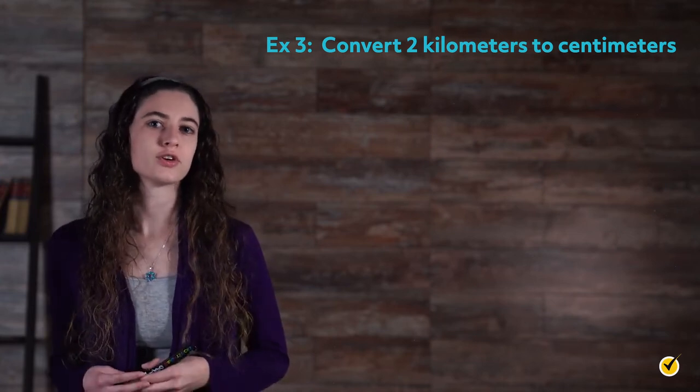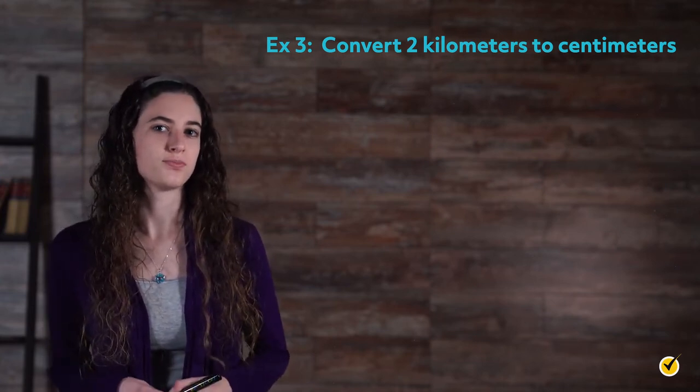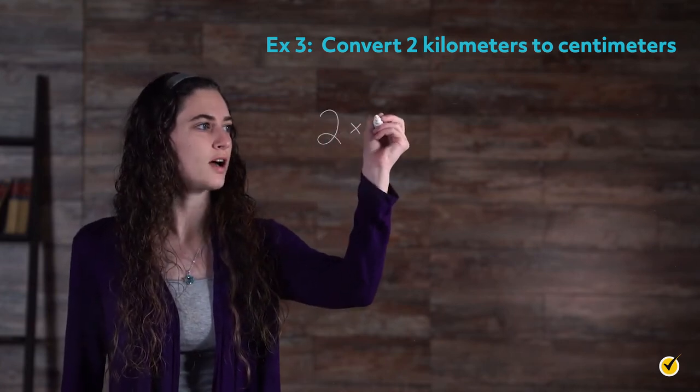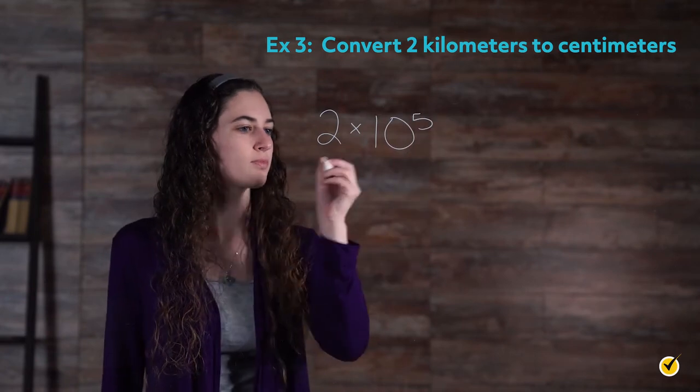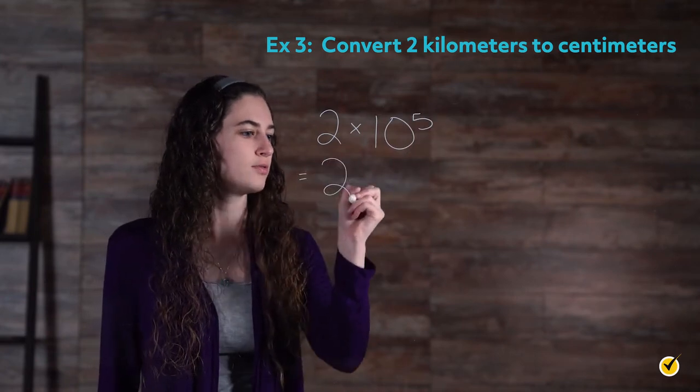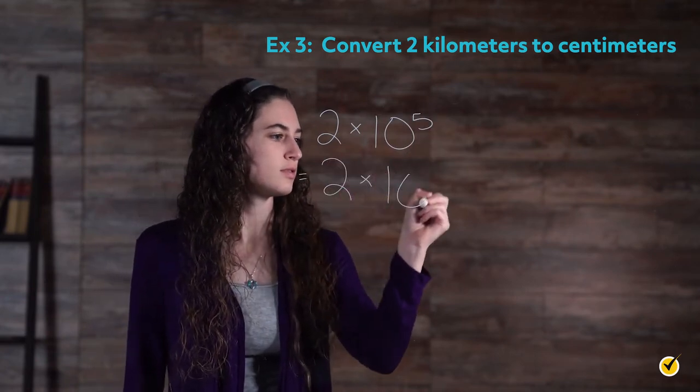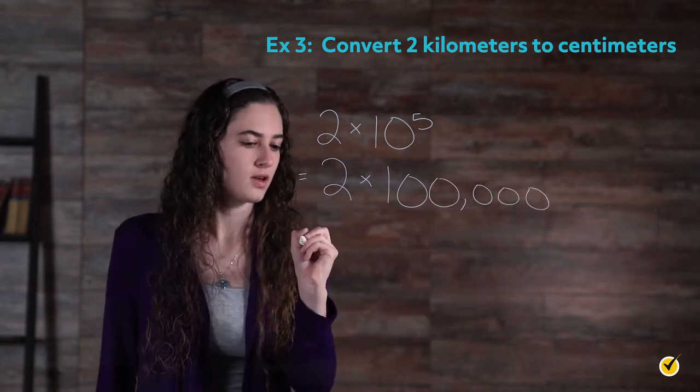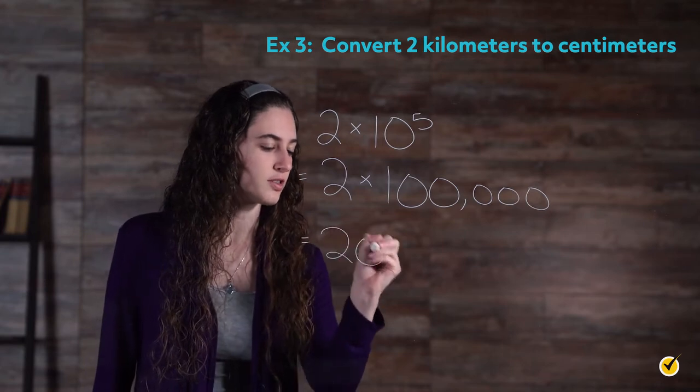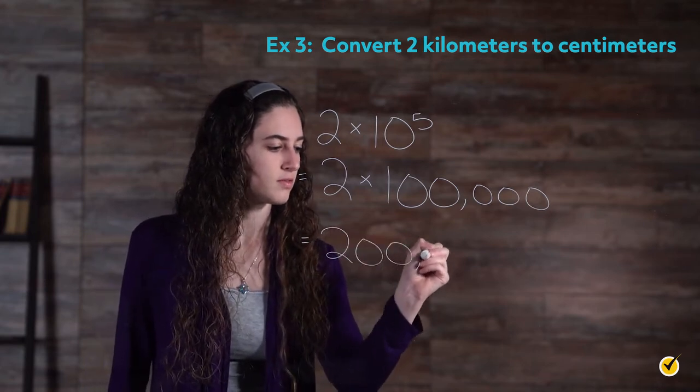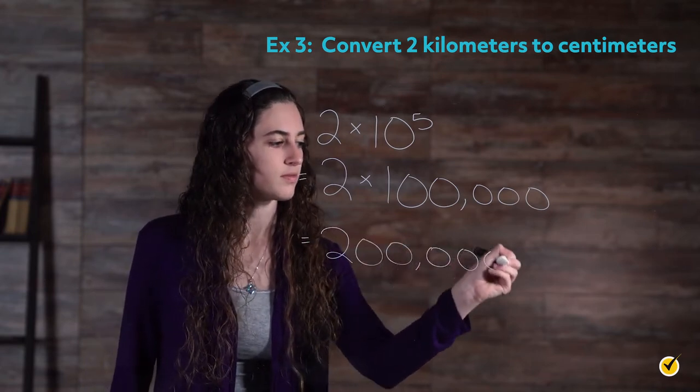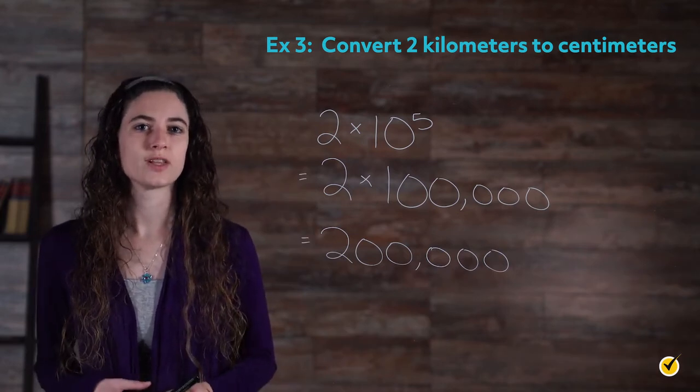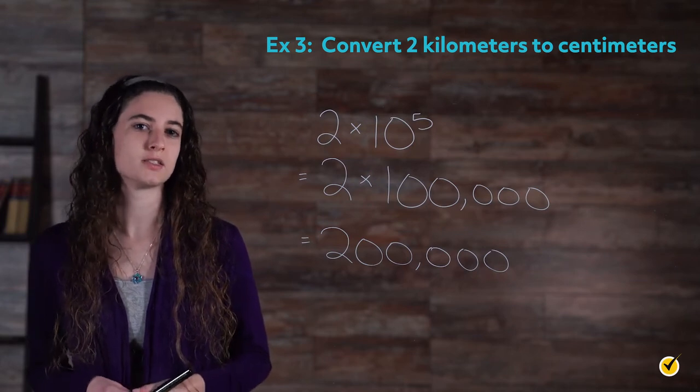Therefore, 2 kilometers converts to centimeters as follows: 2 times 10 to the 5th power equals 2 times 100,000 equals 200,000. There are 200,000 centimeters in 2 kilometers. You can also do this conversion quickly by moving the decimal five places to the right.